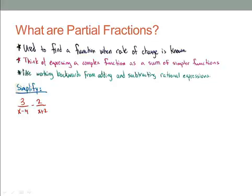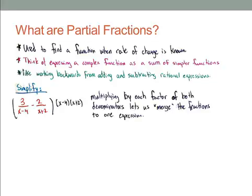We're going to be working to get our functions to look like this. However, in order to give you an idea of what's involved, let's work backwards. I don't like the fractions, so I'm going to multiply both by the denominator to merge them into one expression. When I multiply the first fraction, the x minus 4 cancels and x plus 2 is multiplied in the numerator with 3. The same thing happens with the second fraction — x plus 2 cancels and x minus 4 multiplies the 2.